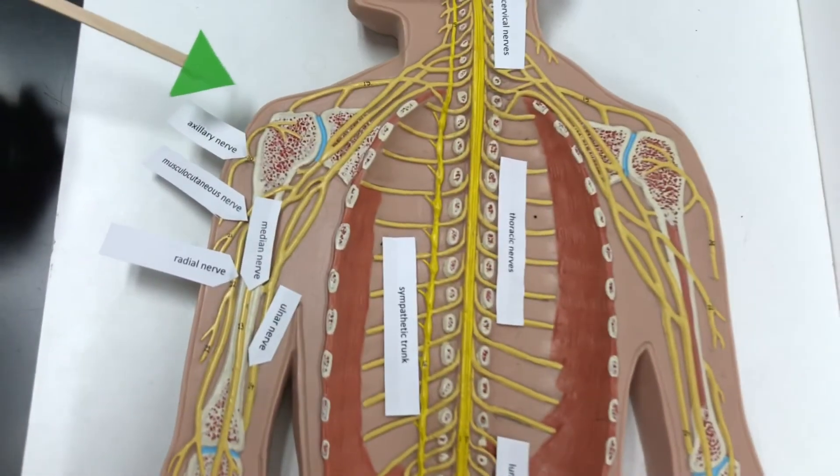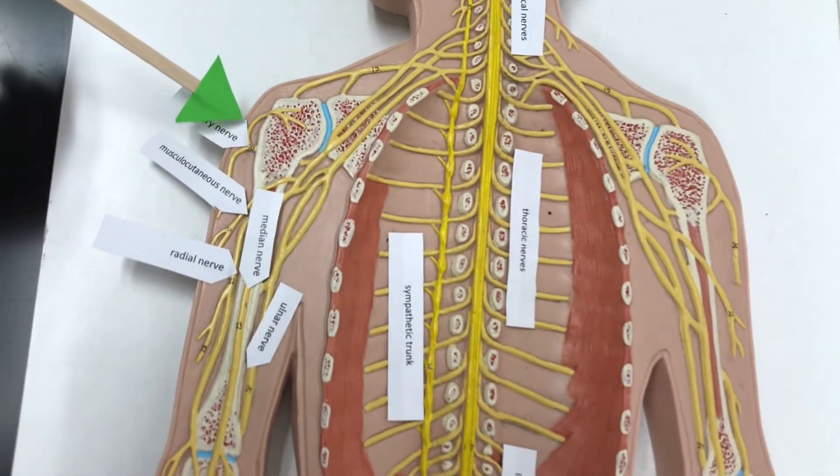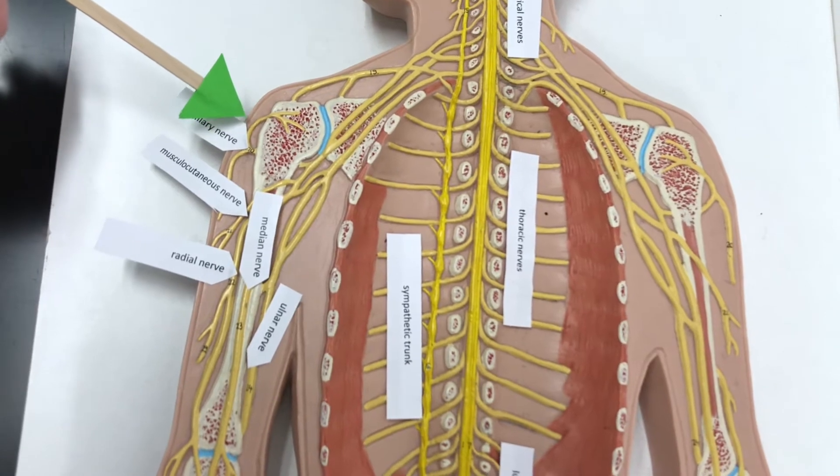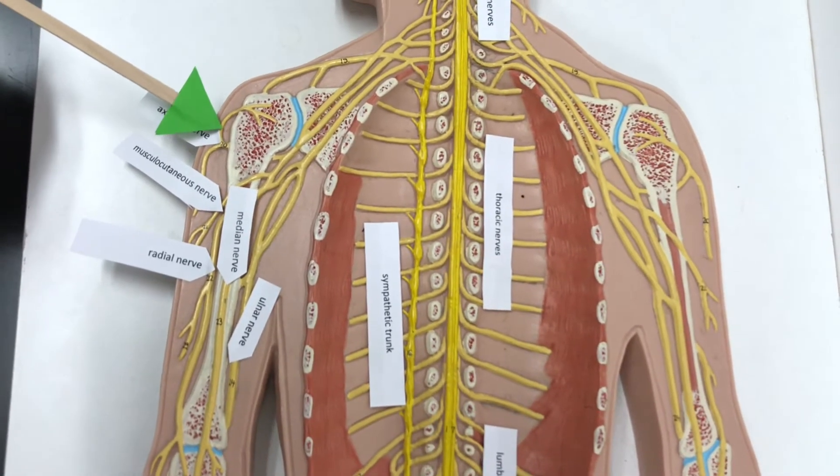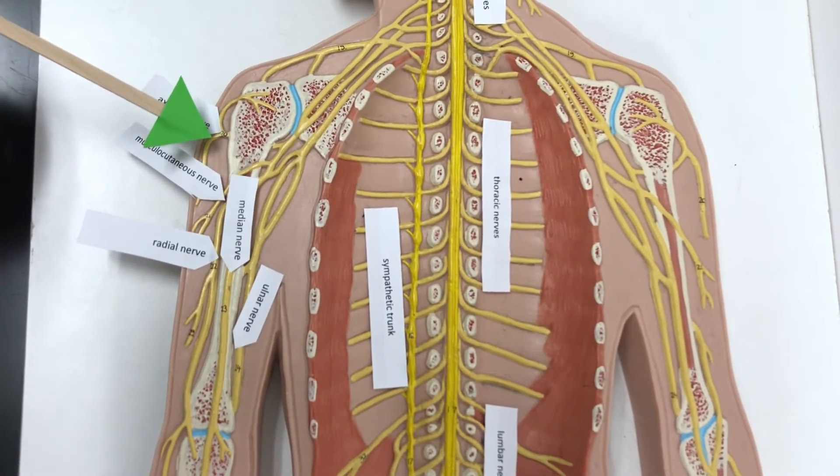In the arm, we have the axillary nerve. It innervates the deltoid muscle as well as the teres minor muscle.